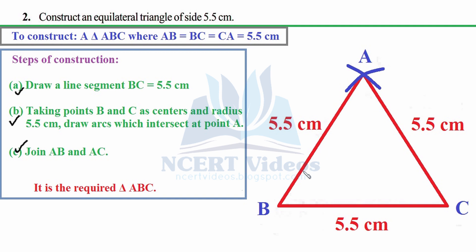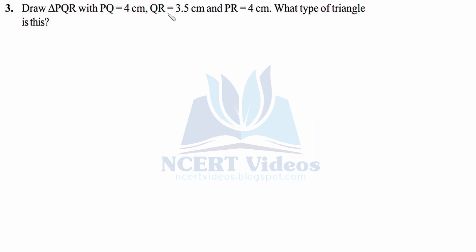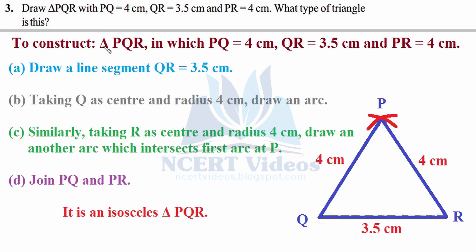Question 3: Draw triangle PQR with PQ equals 4 cm, QR equals 3.5 cm, and PR equals 4 cm. The aim is to construct triangle PQR with those measurements. Step A: Draw a line segment QR equals 3.5 cm. Although it is a decimal, we take 3.5 cm first because the two equal sides suggest an isosceles triangle, so drawing it symmetrically works better this way.